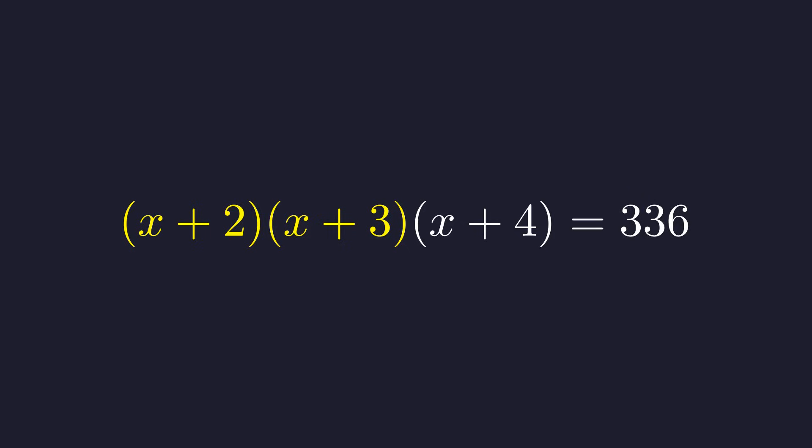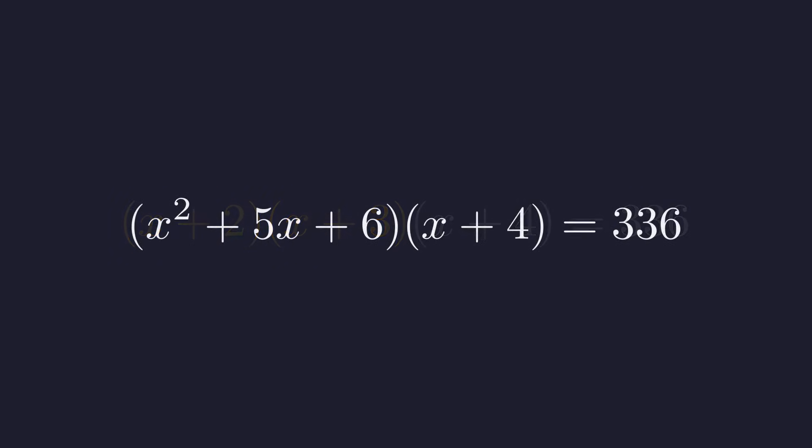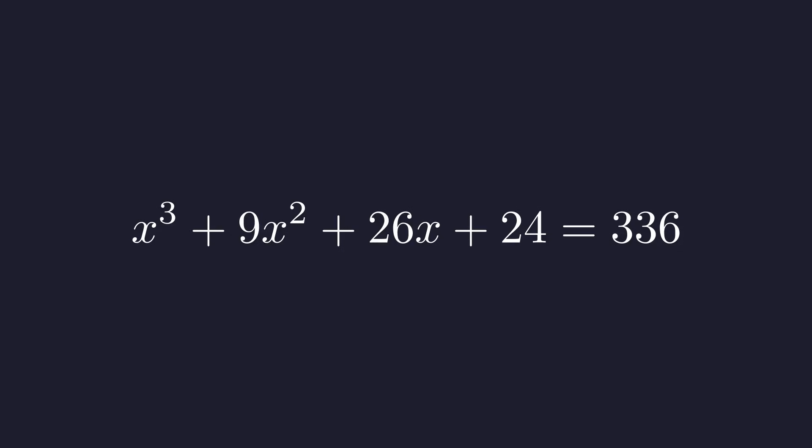This gives us x squared plus 5x plus 6. Next we multiply this quadratic by the final term, x plus 4, and this expansion gives us a full cubic equation.